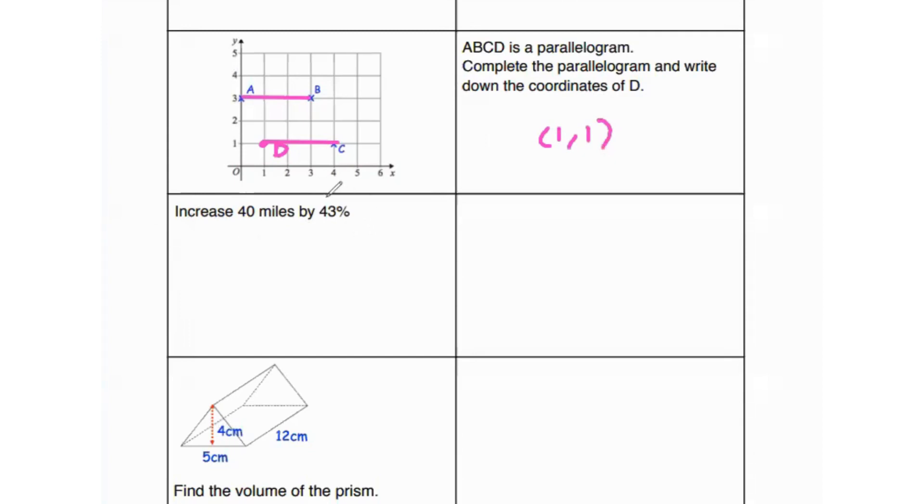Then it says increase 40 miles by 43%. So we will do 40 times 43 over 100, which is basically going to give us 43% of 40. And then we add that value to 40 because they're asking us to increase 40 by 43%. If they were asking us just to show what 43% of 40 is, then we would just do 40 times 43 over 100. Since it's asking us to increase it by 43%, we add 40 times 43 over 100 to 40. Cancel out the zero from the numerator and one from the denominator. That gives us four times 43 over 10 plus 40. Four times 43 is going to be 172 over 10.